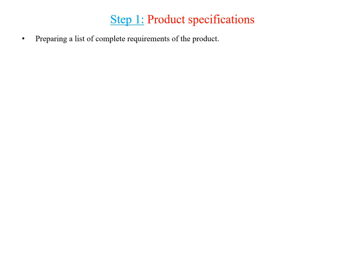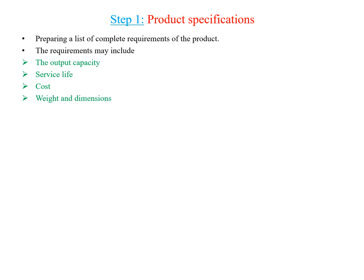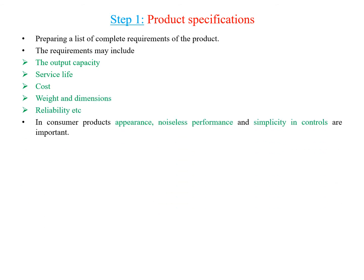Step one is product specification, in which a complete list of requirements of the product is prepared — how it works, how it should work. The requirements may include output capacity, service life, cost involved, weight and dimensions, reliability, consumer product appearance, noiseless performance, and simplicity in control.